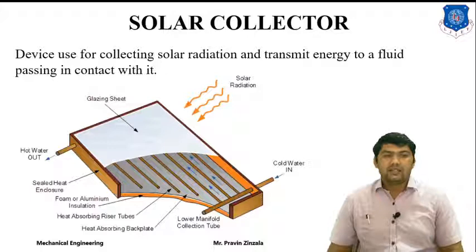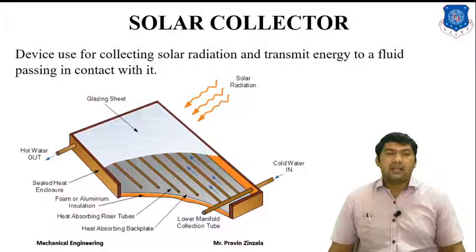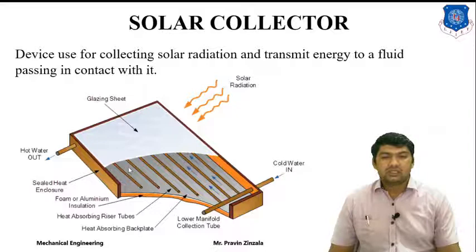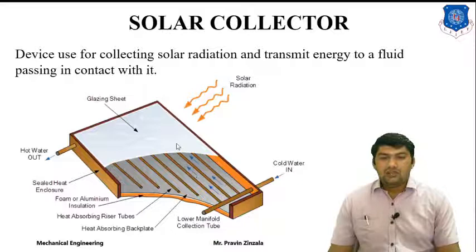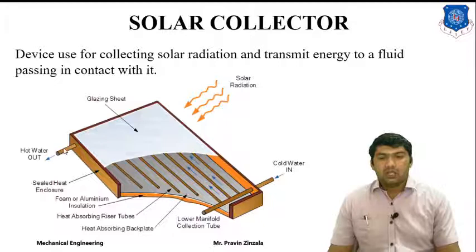In this session, we will discuss about the radiation collecting device — our final applications of solar energy. It is a device used for collecting solar radiation and transmitting the energy to the fluid passing through it. Whenever the solar radiation strikes the surface of a collector — as direct radiation or diffuse radiation — it will transmit the energy to the fluid. Cold fluid is supplied from the bottom and hot fluid is obtained at the outlet.